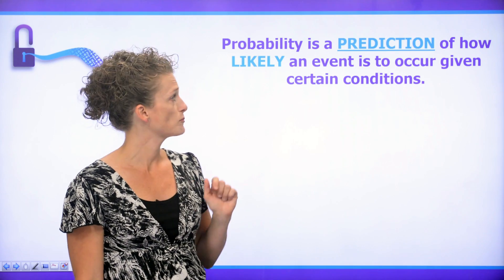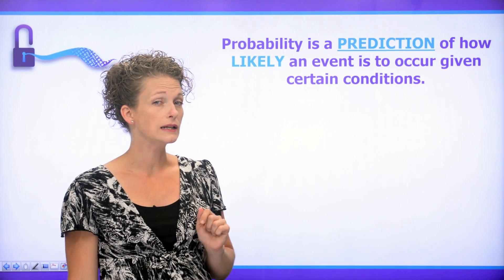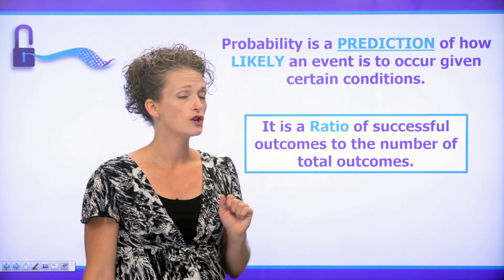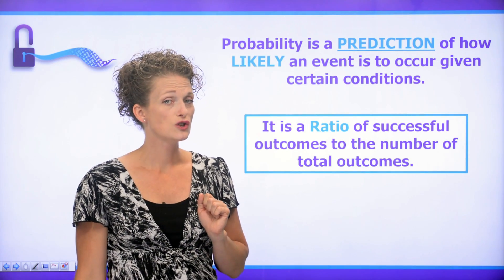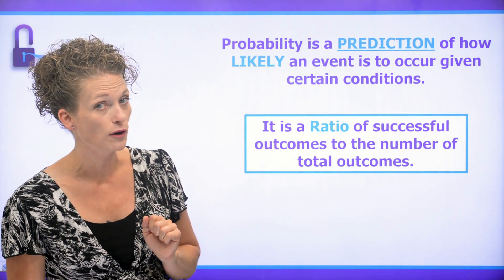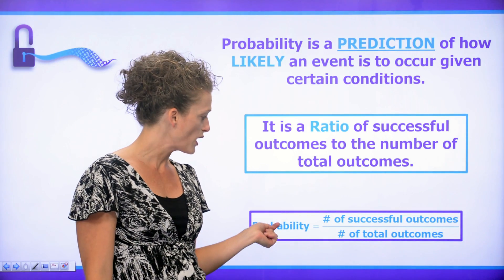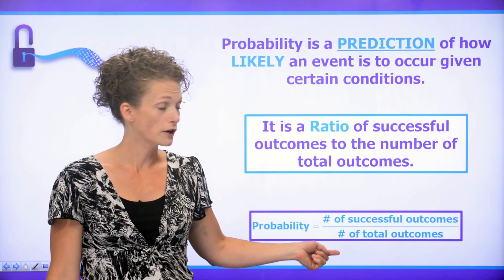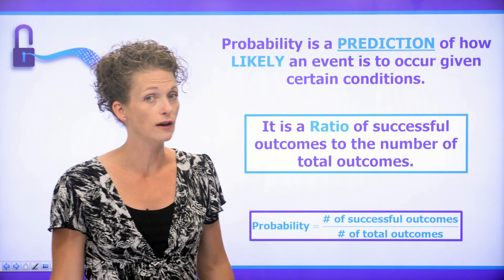The probability is a prediction of how likely it is that an event is going to happen. It's a ratio of successful outcomes to the number of total possible outcomes. And we write it like this. So, we write the probability is equal to the number of successful outcomes over the number of total outcomes.